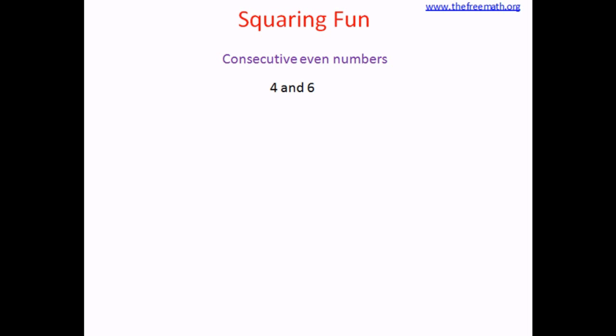Now multiply 4 by 6, so 4 times 6 is 24. Now add 1 to it. So plus 1 equals 25 and you know that 25 is the square of number 5.